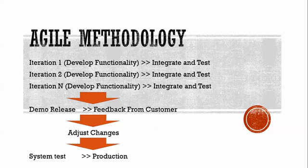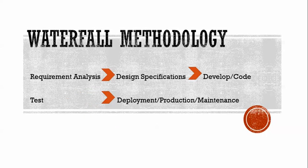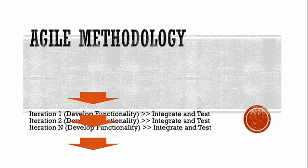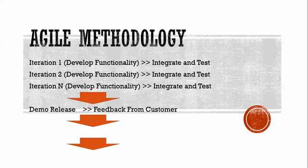Once everything is done, it goes to system test. System test is testing the whole system and its main functionality, done by testers. There are also acceptance tests done by customers — User Acceptance Testing — where customers test the website and confirm everything looks fine. Then it goes to production, which is publishing the website or software once the system test is complete.